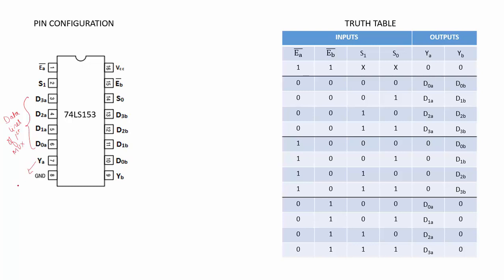Pin number 7 is the output of the first multiplexer. Pin numbers 10, 11, 12, 13 are the data lines of the second multiplexer. Pin number 9 is the output of the second multiplexer. Pin number 15 is an active low enable input given to the second multiplexer.